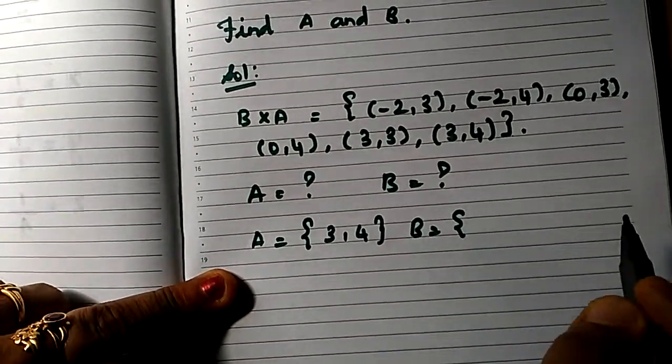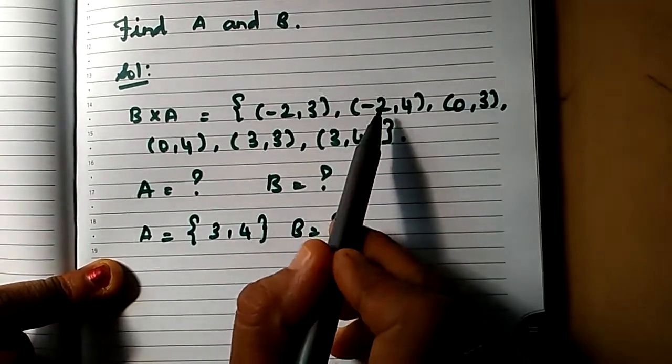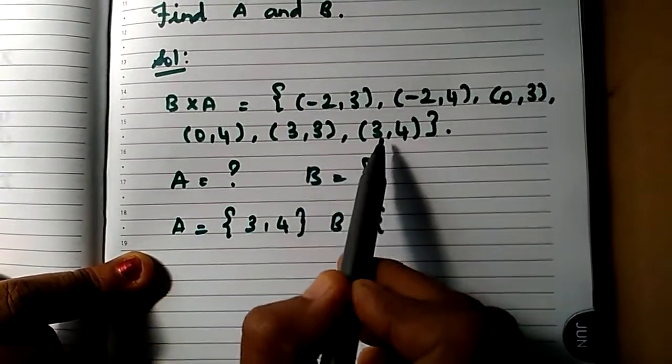Next, B's elements. Looking at the first position: minus 2, minus 2, next 0 and 0, next to 3 and 3.